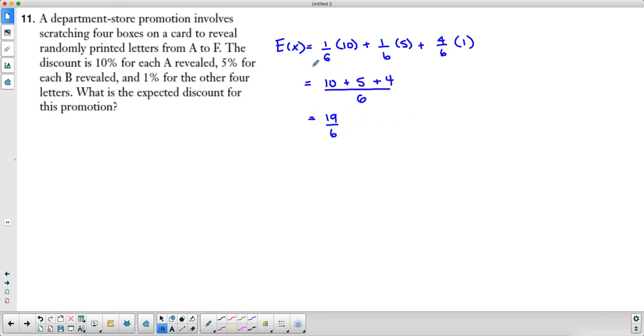Now that's the expected value for one box. Notice that it actually said that there are four boxes on the card. So this is for one box. Since there are four boxes, we have to do 19/6 times 4 to get the expected value for four boxes.